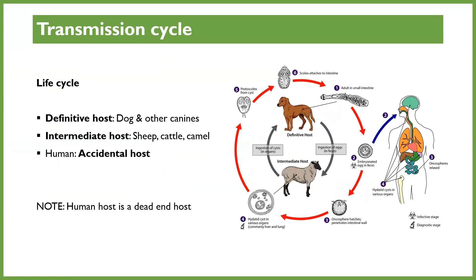The transmission cycle is very interesting. First, we have to understand that the human host is not supposed to be in this cycle — we are just accidental hosts. Typically, the cycle happens between dogs and the other animals that are intermediate hosts, like sheep or cattle. The definitive host is the dog or other canines, and the intermediate hosts are normally sheep, cattle, and sometimes camel. Humans are not supposed to be in this cycle, and therefore when they get the eggs of this organism, the transmission cycle basically ends there — the human host is a dead-end host, because humans cannot participate in transmission.